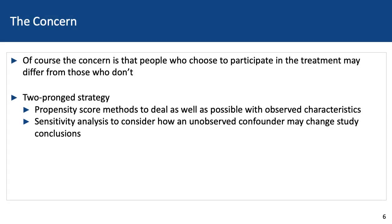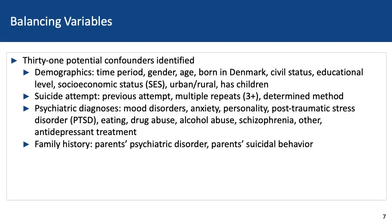The reason we're talking about propensity score methods here is that people who choose to participate in this treatment or who are able to go to one of these centers might differ from those who don't. So what we're doing is using a two-pronged strategy. First, we will use propensity score methods to deal as well as possible with observed characteristics and try to equate the treatment and comparison groups on a large set of observed characteristics. Then as a second step, we will do a sensitivity analysis to consider how an unobserved confounder might change our study conclusions.